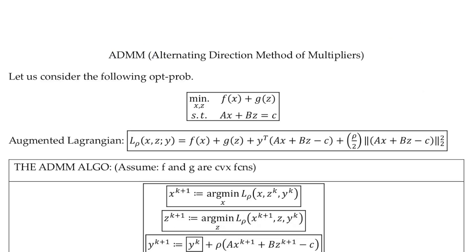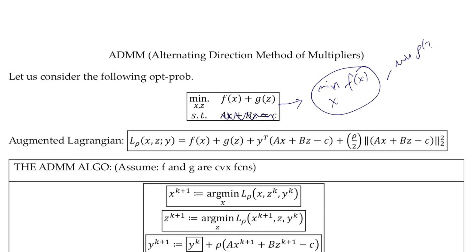Let's consider the following optimization problem. We have x and z as decision variables. As a quick reminder, f and g must be convex functions of x and z respectively. If there is an equality constraint, that's fine — but if we didn't have that equality constraint, it would be easy to decompose the problem.